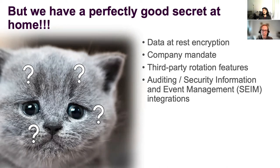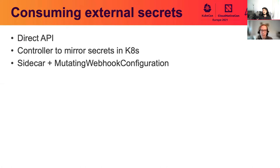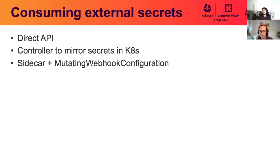So what do you do? There are a few options to consume external secrets. First, you might look into modifying your application to fetch the external secrets from the external API directly using the SDK provided by your provider. This may not be possible, though, depending on your deployment. You may not have the code to edit, or it may be prohibitively expensive to implement these changes. And if you're targeting deployments against multiple secret providers, this effort would need to be duplicated for each secret system.